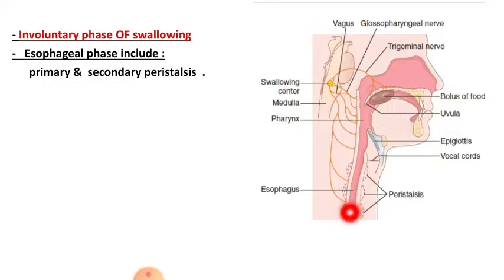As food particles descend and before entering the stomach, in the lower part of the esophagus — specifically the lower 3 cm — the circular muscle becomes thickened, functioning as a sphincter called the lower esophageal sphincter, also known as the gastroesophageal sphincter. The circular muscle here is very thick, forming this sphincter.